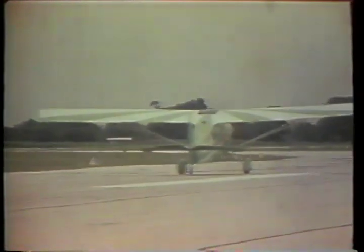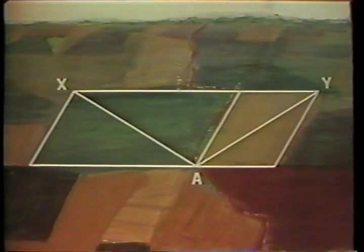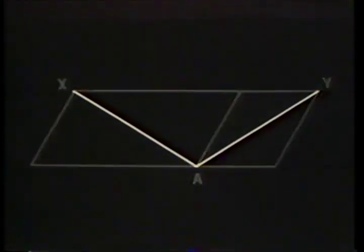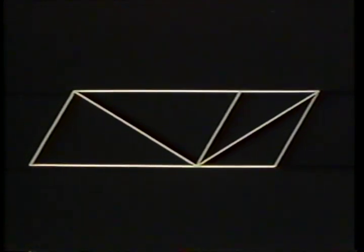Here's something you must do whenever you come in for a landing: judge the runway length. Looking at two lines, A-Y and A-X — how much longer is A-X? Before answering, let's remove the surrounding terrain. They're actually identical. The only problem in the air is that you can't eliminate the background, and it influences your judgment of what you see.